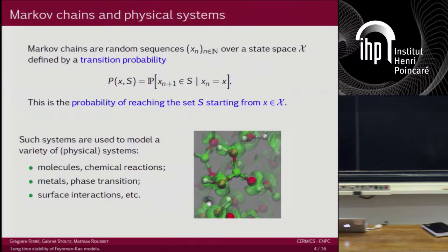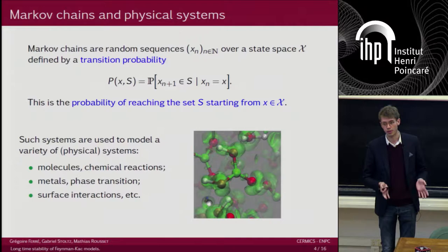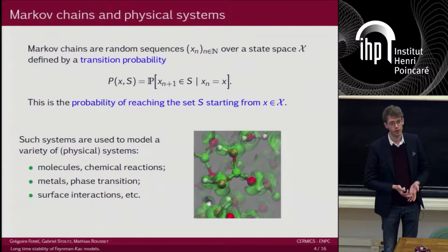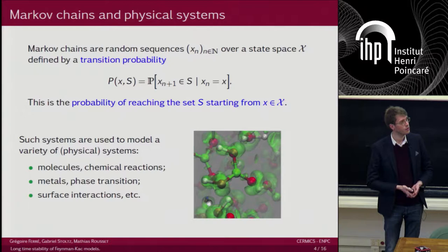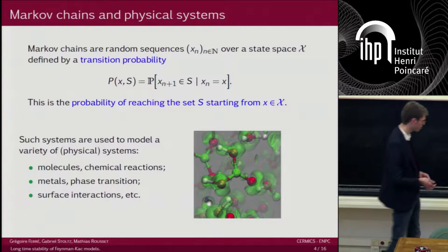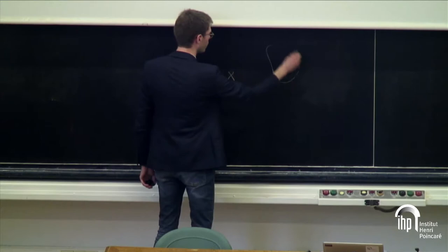What are we studying? It's simply Markov chains. In a very simple framework, I define them by a transition operator. It's a sequence of random elements x_n, defined by the operator P, which is simply the probability of reaching a set S starting from a position x. That's how I define my dynamics for any starting point and any set S.